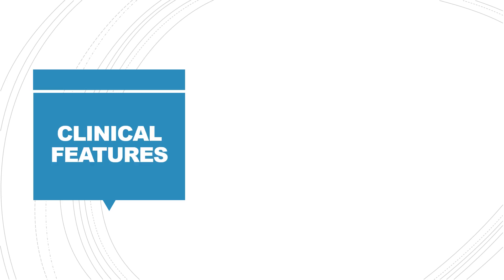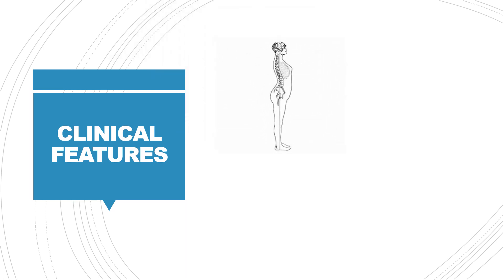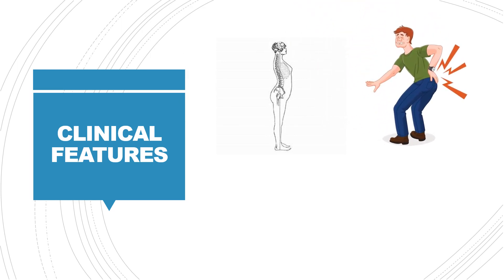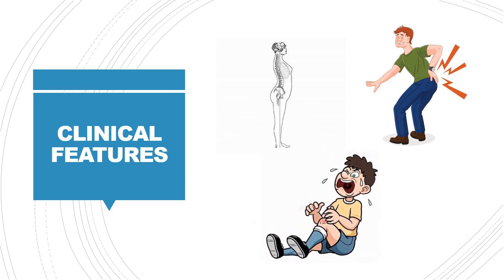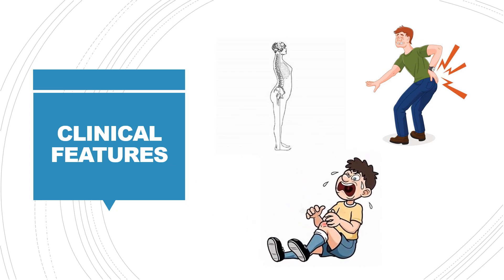The clinical features of lordosis include prominence of the buttocks, back pain, and leg pain. In this particular spinal abnormality, there is specifically a prominence of the buttocks, which is very important to know. There would also be back pain as well as leg pain.